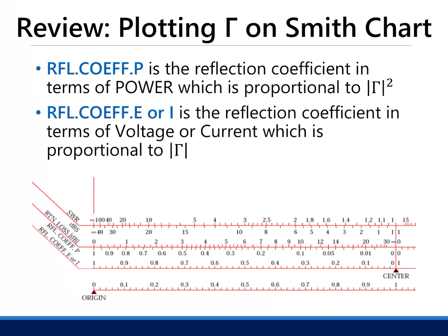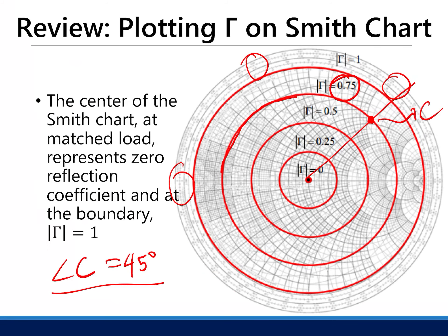The radius can also be measured using the ruler. If the radius is 0.1, use that length on your compass and draw a circle around the center you just located. This is now your stability circle. This circle represents the values of gamma_L or gamma_S that make |gamma_in| or |gamma_out| equal to 1. You want these to be less than 1.